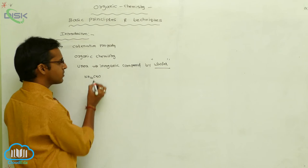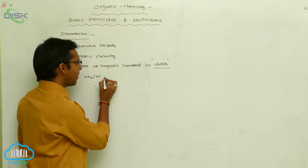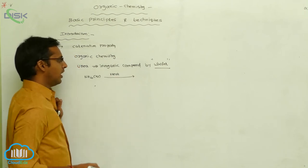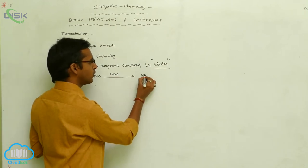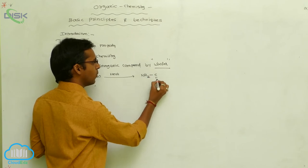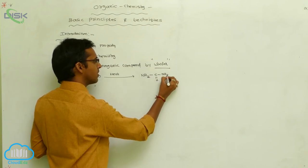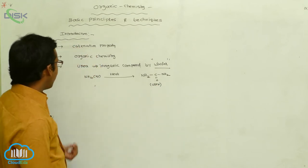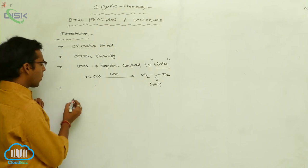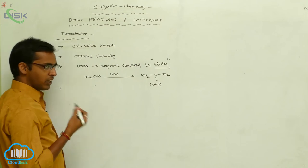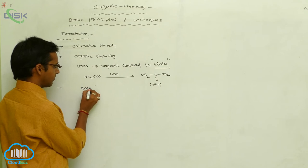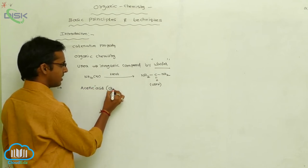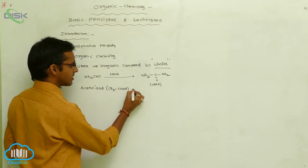Urea is prepared from the inorganic compound ammonium cyanate. When ammonium cyanate is heated, it produces urea. The formula of urea is NH₂-C(=O)-NH₂. Next, not only this — Kolbe achieved the pioneer synthesis of acetic acid. The formula of acetic acid is CH₃COOH.